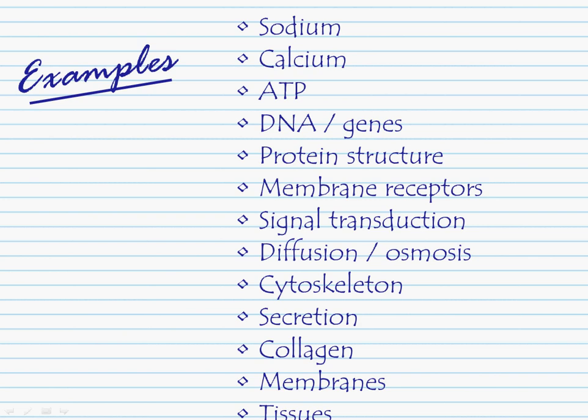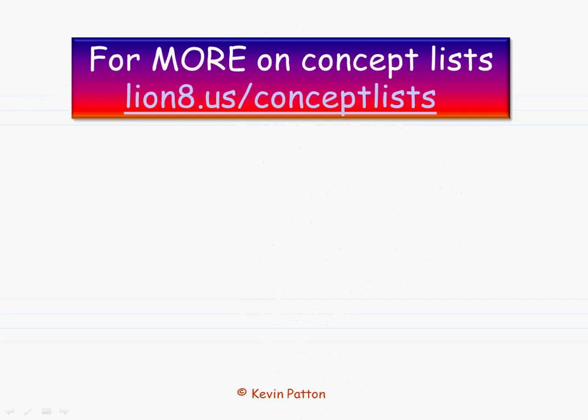You're going to end up with a whole encyclopedia of these things, so there's no one comprehensive list. If you want to know more about using concept lists, go to the URL shown at the top of your screen. For general study tips in studying Human Anatomy and Physiology, visit theapstudent.org.